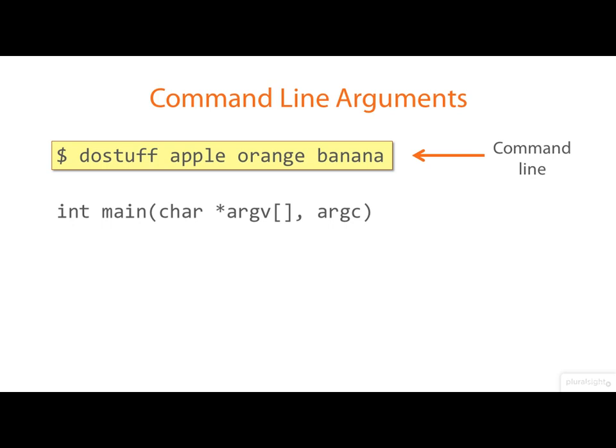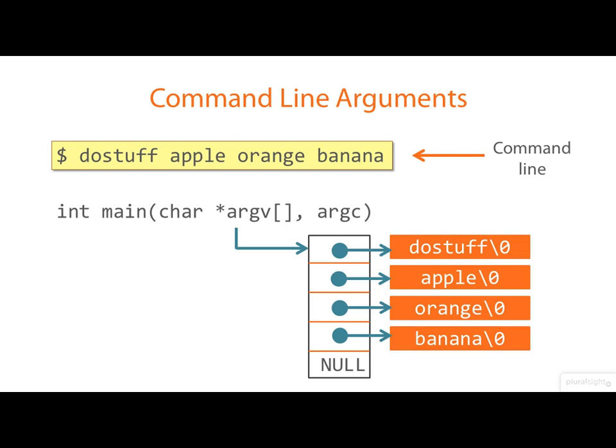Now the way that you access these from your program is via two parameters passed into main. You can call them anything you like, of course, because C associates arguments with parameters by position, not by name, but you'd be flying in the face of convention if you call them anything other than argv and argc. Now argv points to an array of pointers to strings and these point out to the command line arguments. Each string is null terminated. This array of pointers has a null at the end.